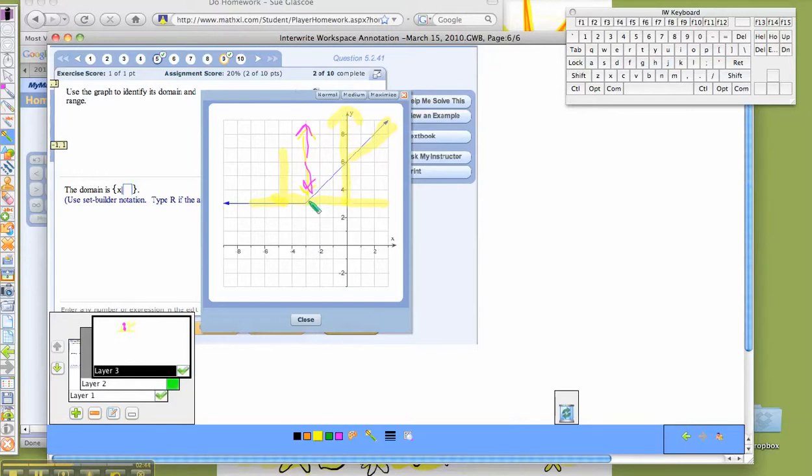So my graph, and you always read lowest to biggest if you're doing interval notation, so I'll start with interval notation. Again my range is up and down, so it will start here and go up forever.